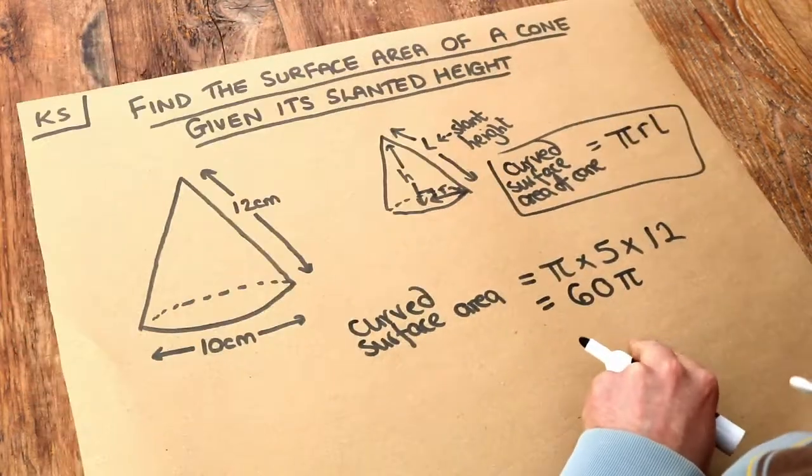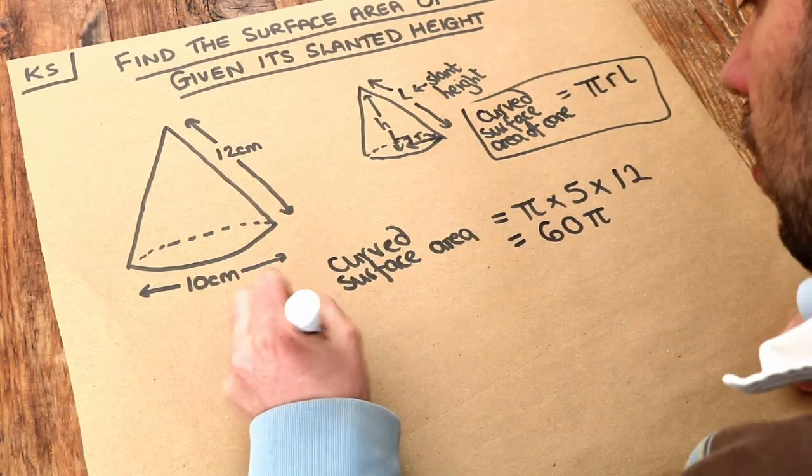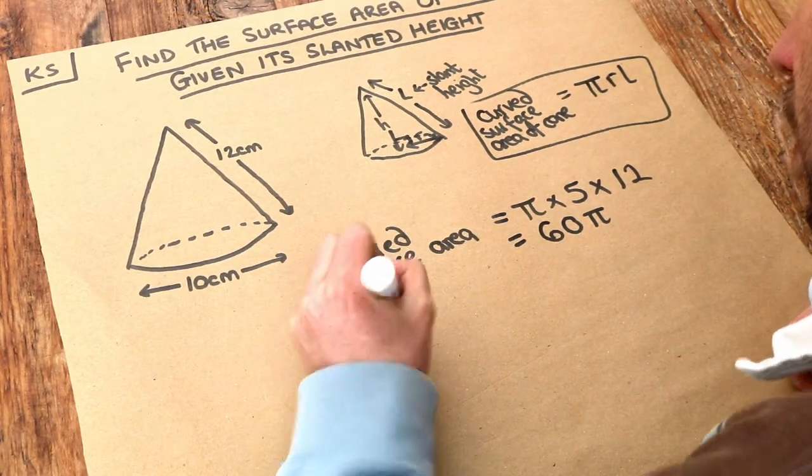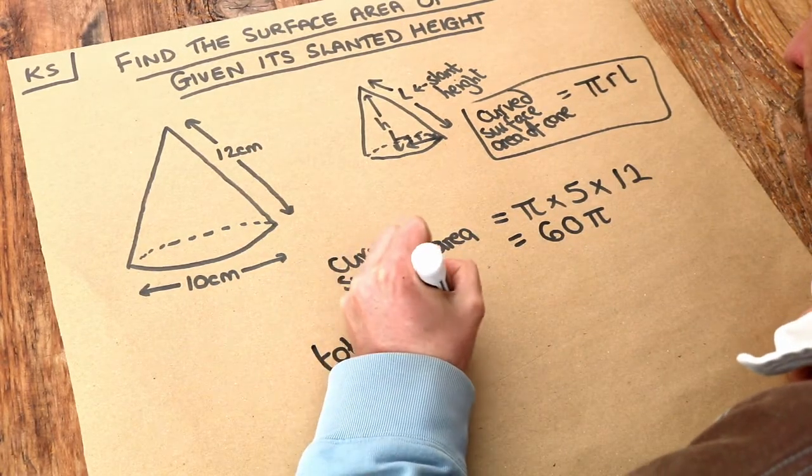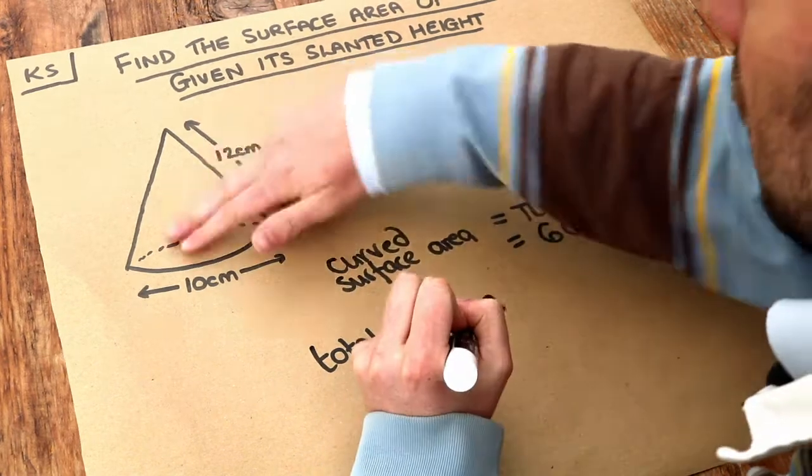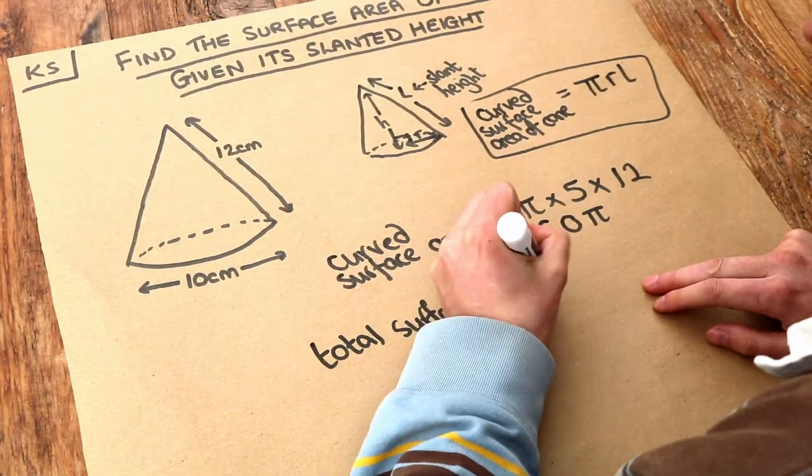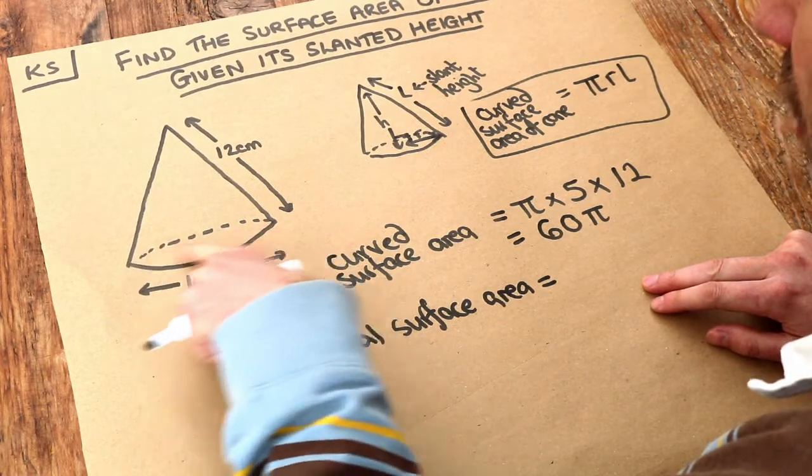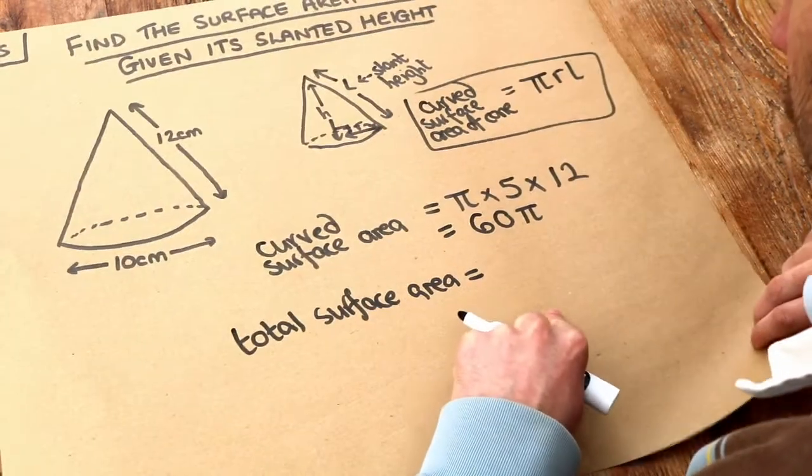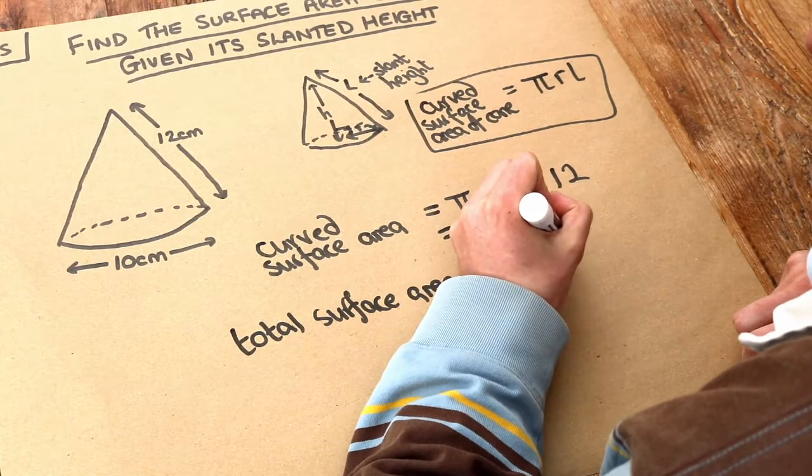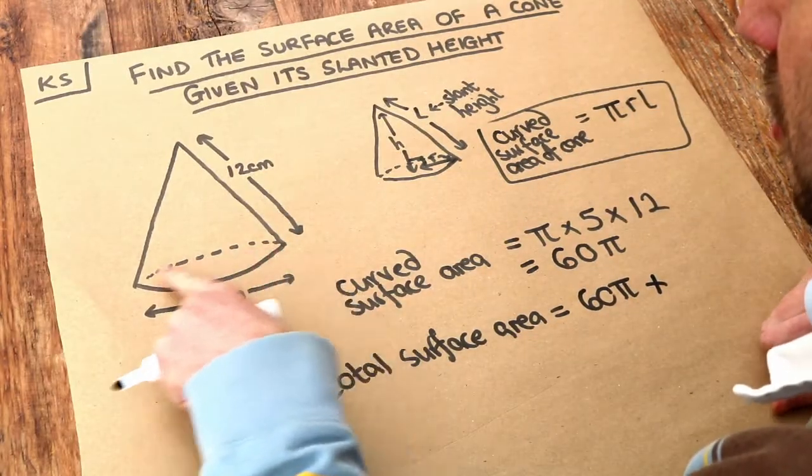But we want the total surface area, which is the curved surface area plus the other face at the bottom, a circle. That's 60π plus the area of the bottom.